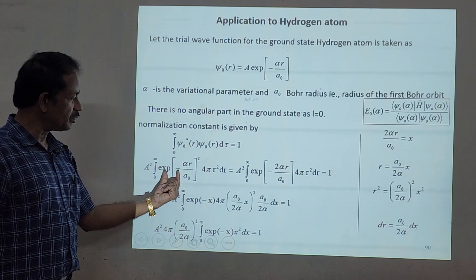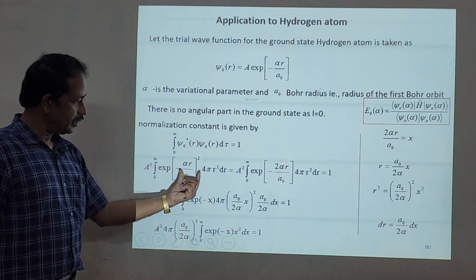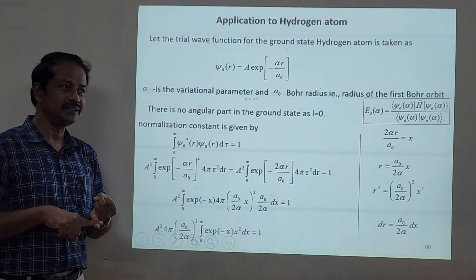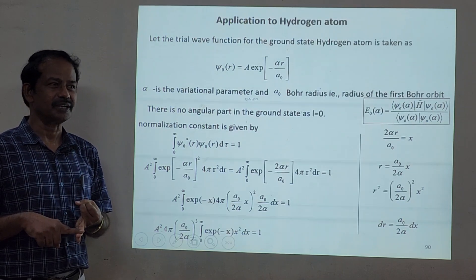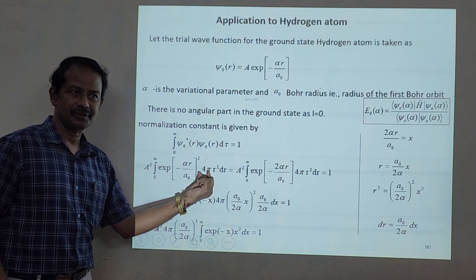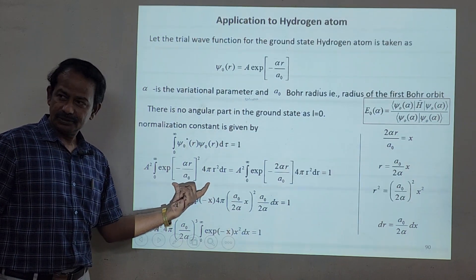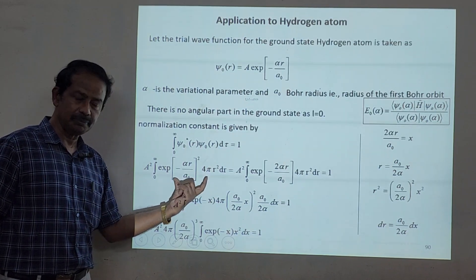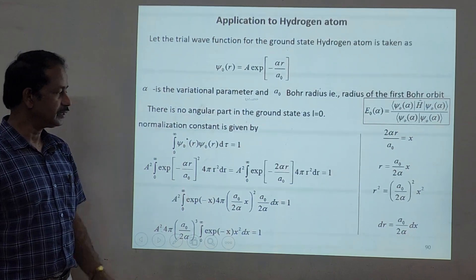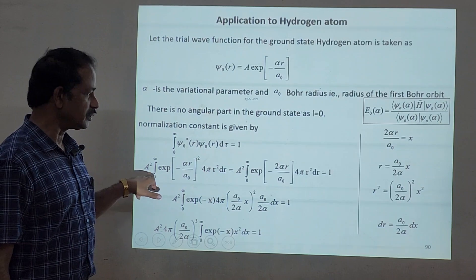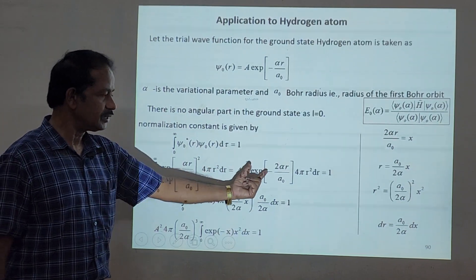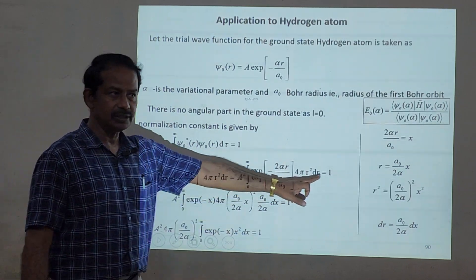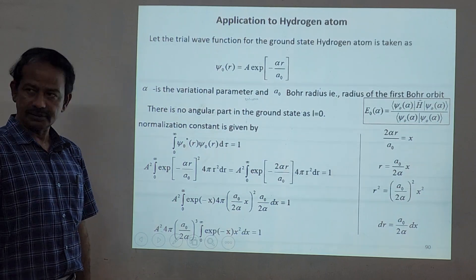For the hydrogen atom we use only the radial part. The spherical harmonics contribute a factor of 4π, so the volume element becomes 4πr²dr. Pulling the normalization constant a² out, the normalization condition becomes: a² times the integral from 0 to infinity of e^(-2αr/a₀) 4πr² dr = 1.